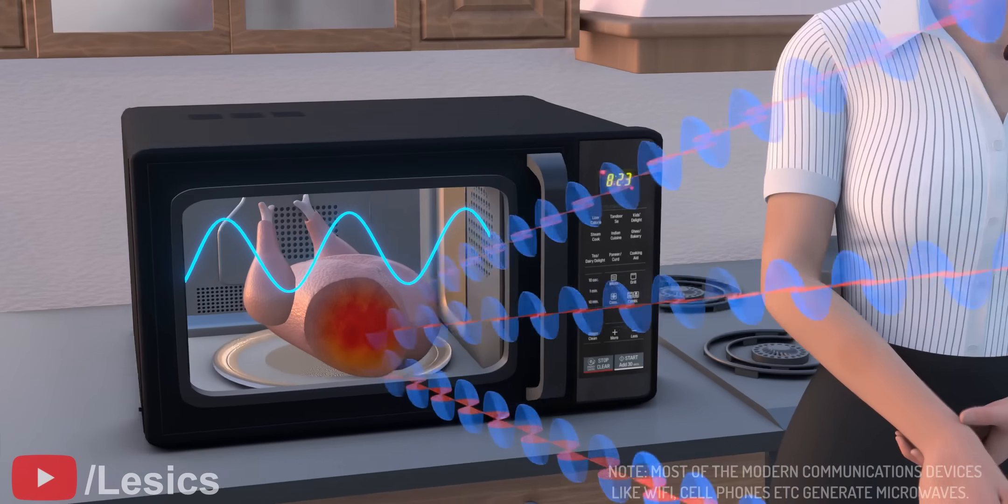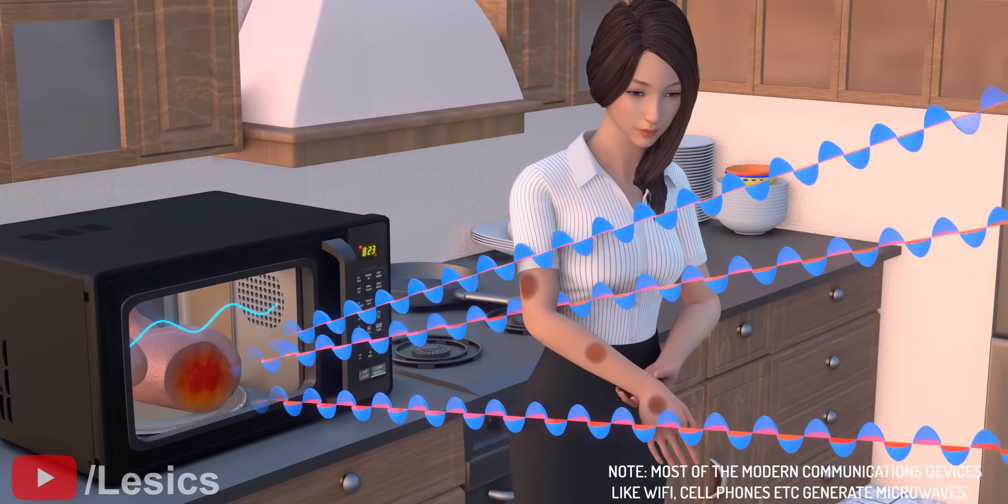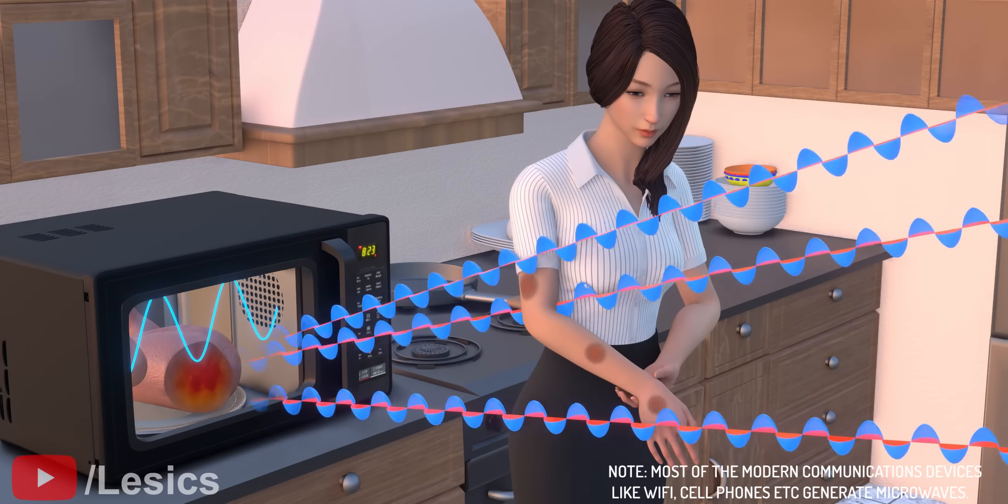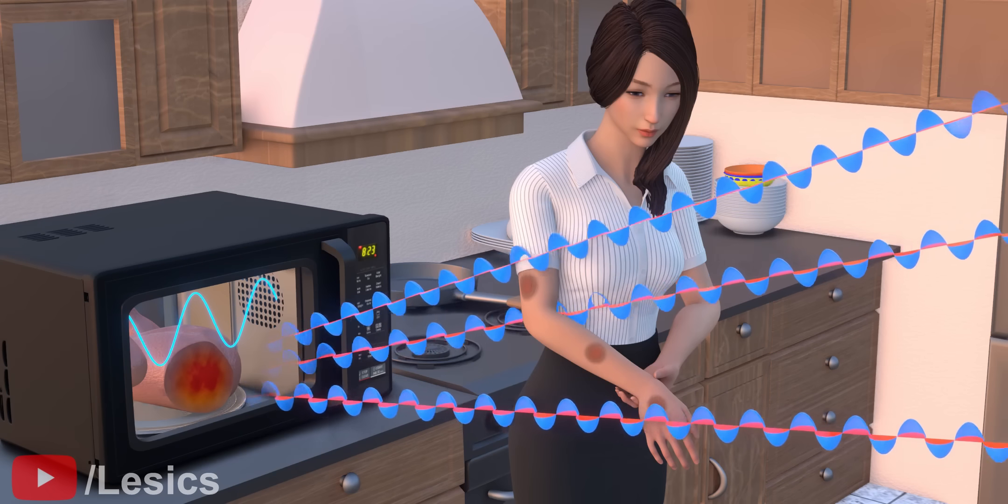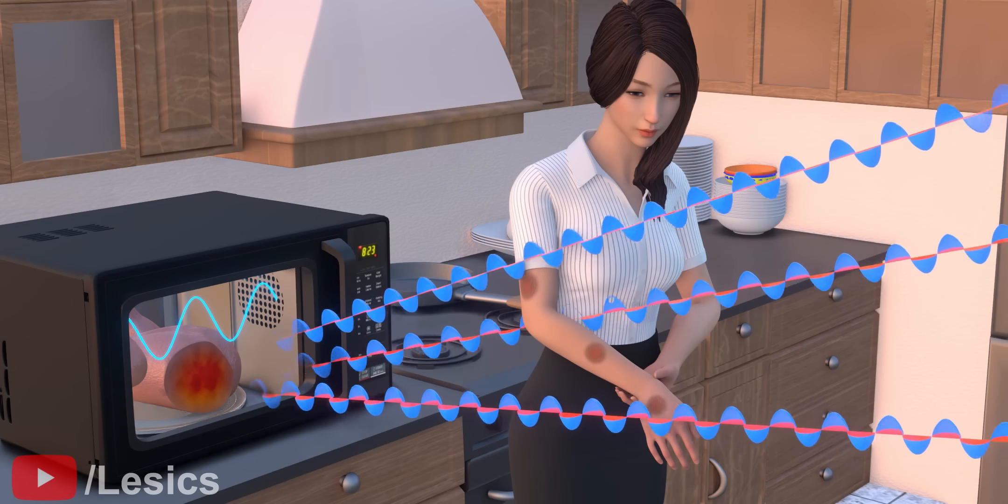The powerful microwaves produced by an oven can be hazardous to humans if we come in direct contact with them. But don't worry, the electromagnetic radiation produced by a microwave oven is always confined within it. It will never leave the chamber. So there is no point in worrying about the health hazards caused by the electromagnetic radiation of microwave ovens.